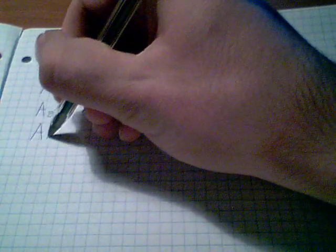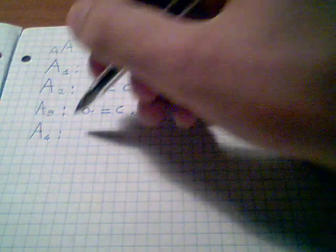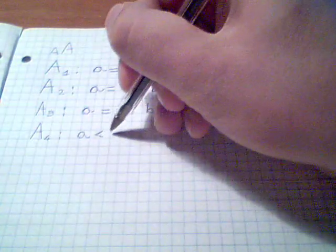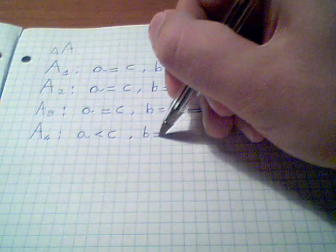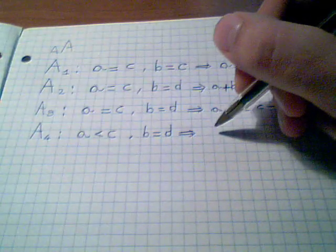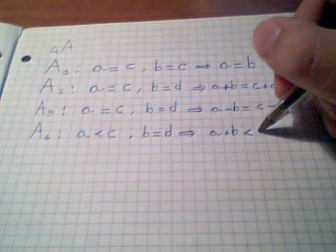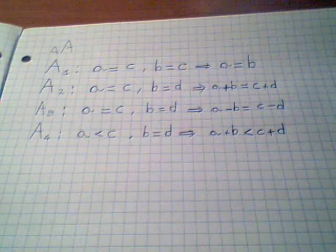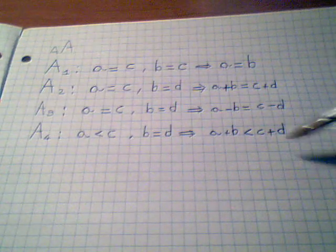Axiom number 4 says that if A is less than C and B is equal to D, then A plus B will be less than C plus D. Again with our algebra, that should be obvious.